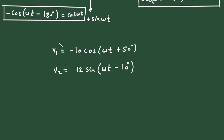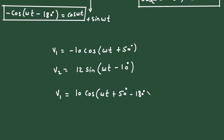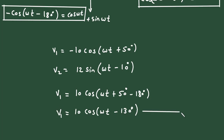For V1, we change minus to plus keeping the amplitude 10, giving 10 cos(ωt + 50°), and then add minus 180°. Simplifying: V1 = 10 cos(ωt - 130°). This is equation number 1.